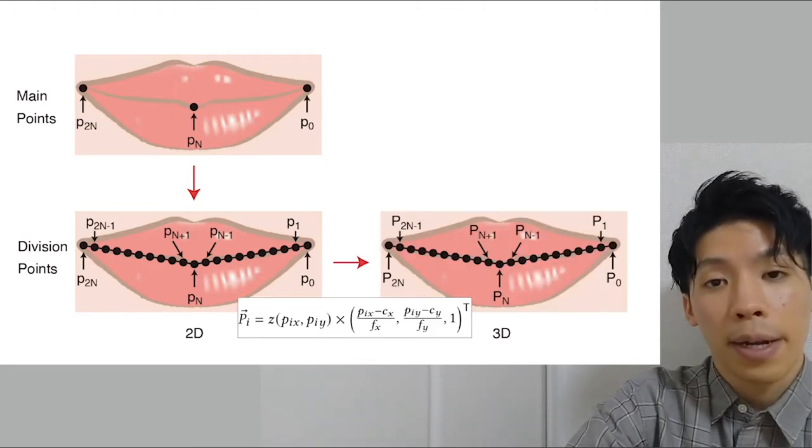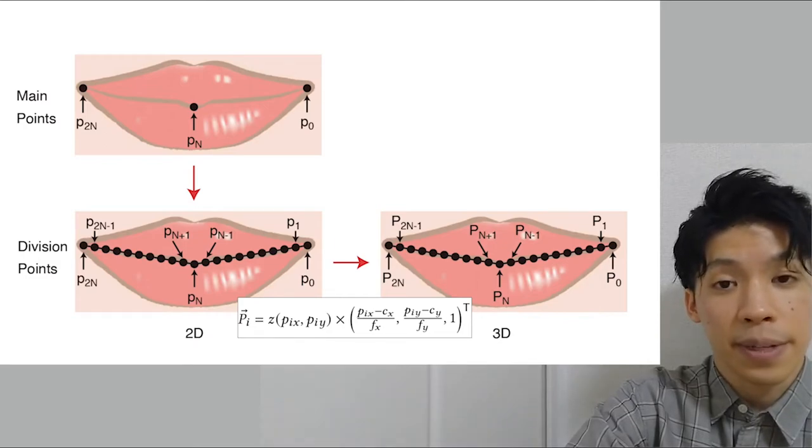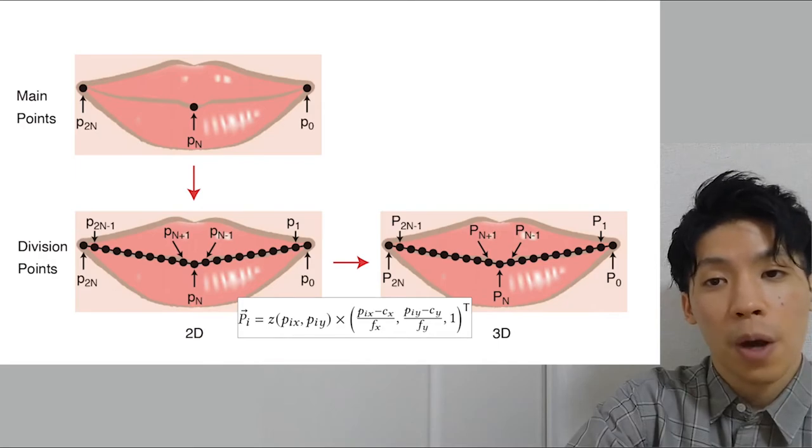Finally, by combining them with the depth information from the depth sensor, we can calculate the 3D coordinates of each division point. From these point coordinates, we can select the point to be stimulated according to each purpose.